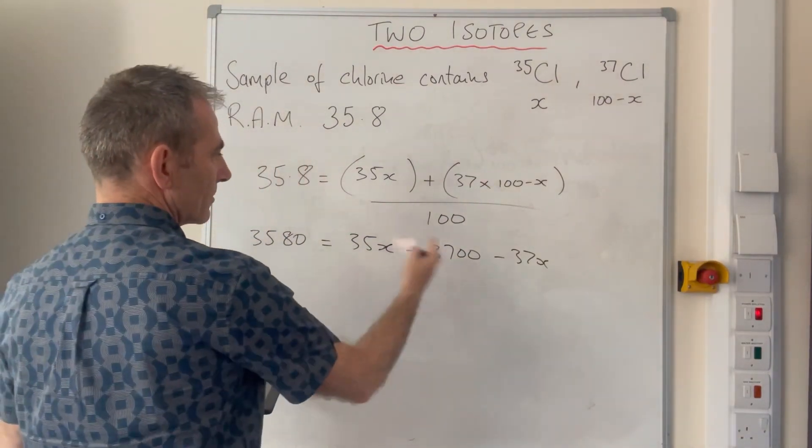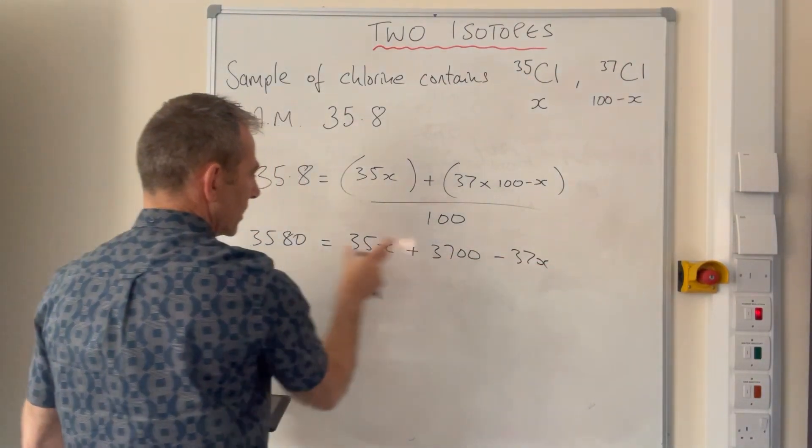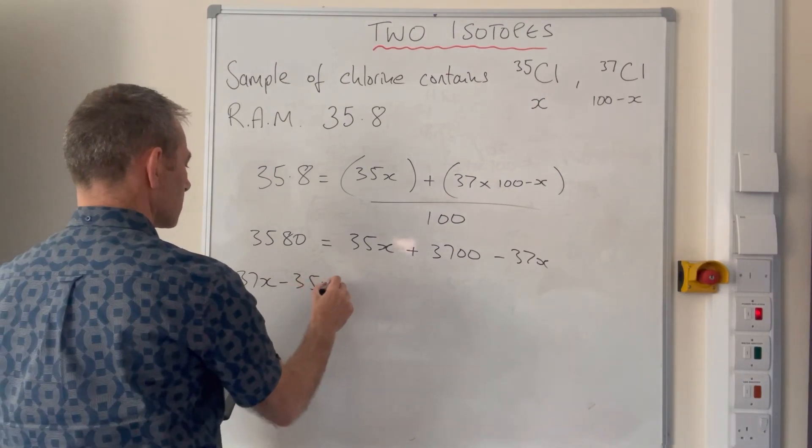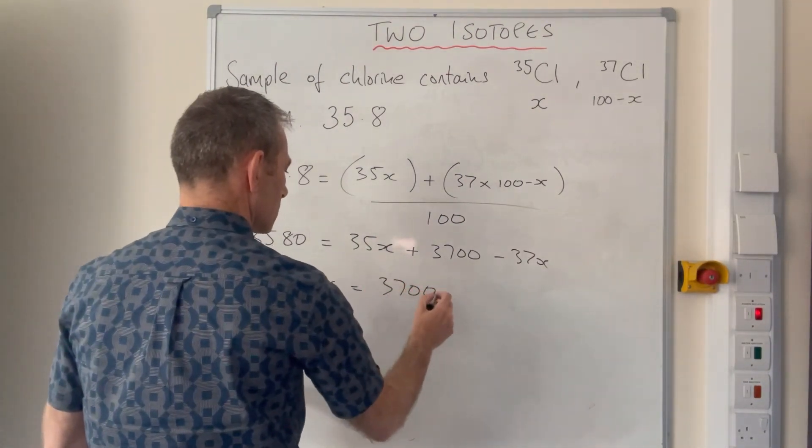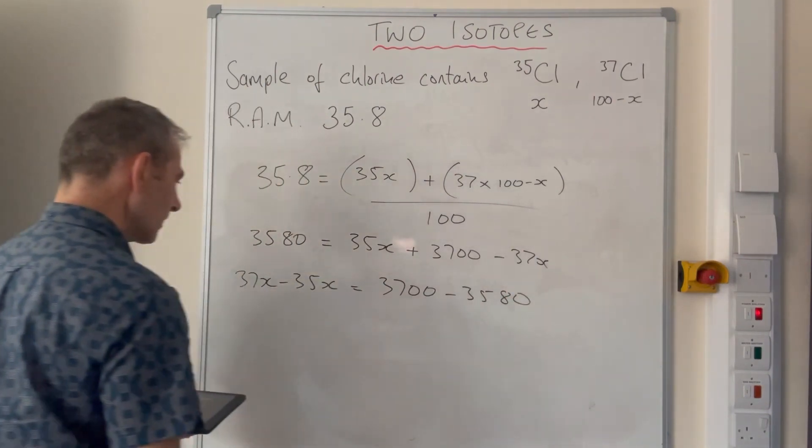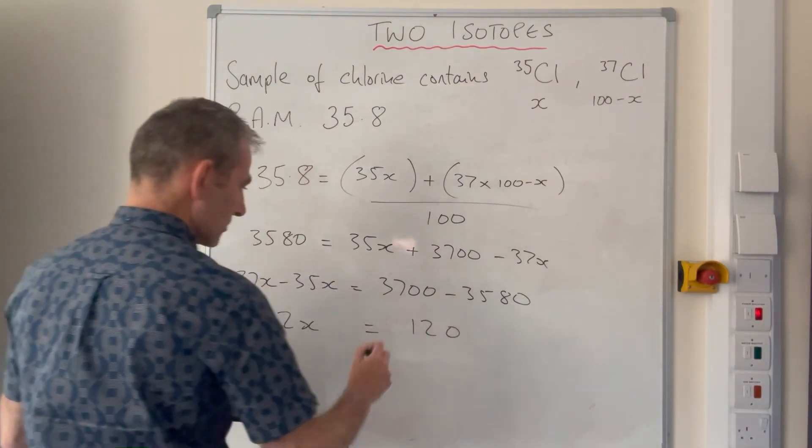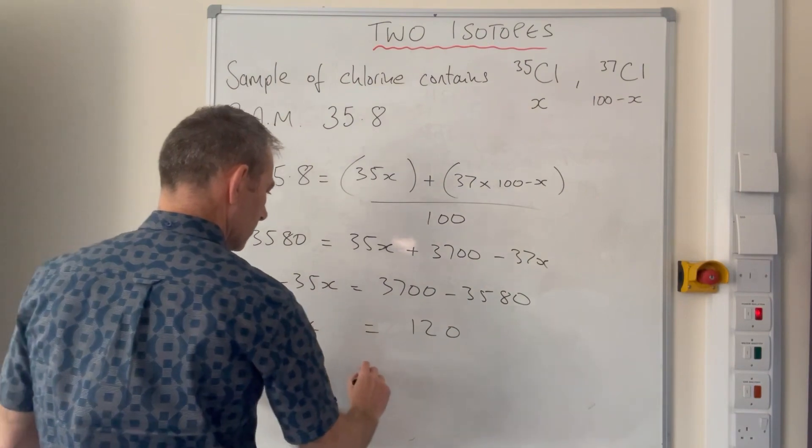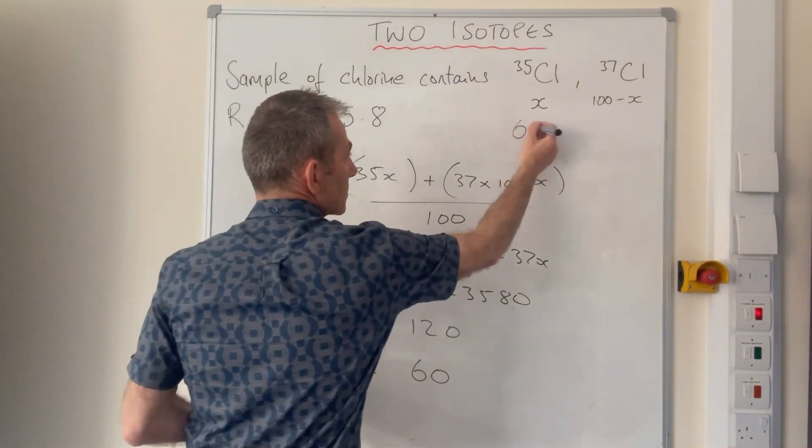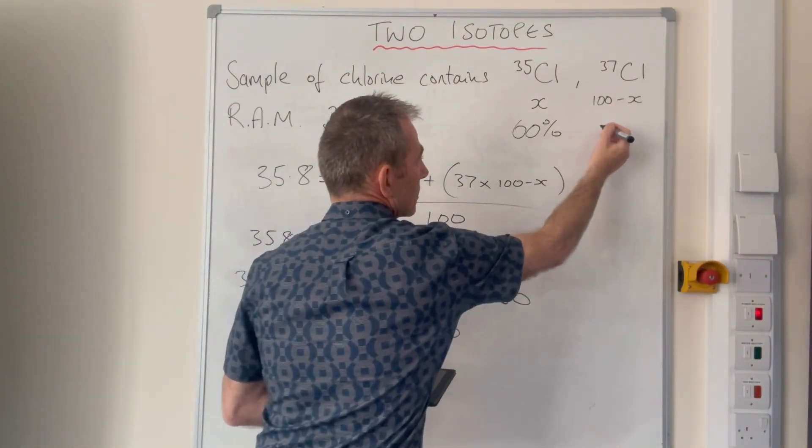We need to solve for x, so if we take the x's onto this side, that'll turn this into plus 37x on the left, that'll go to minus 35x. So that's 37x minus 35x equals 3700 minus 3580. So obviously that's 2x and that equals 120. So divide by 2, x equals 60. So the percentage abundance of chlorine-35 is 60%, so therefore the 37 isotope must be 100 minus that, 40%.